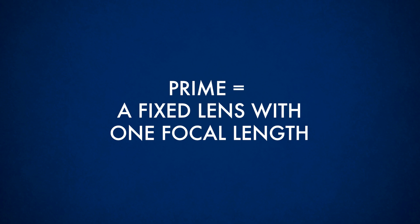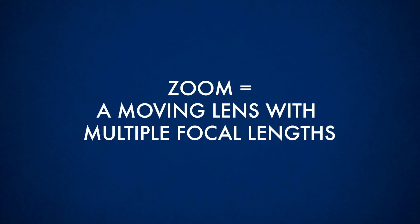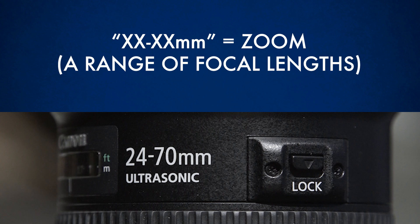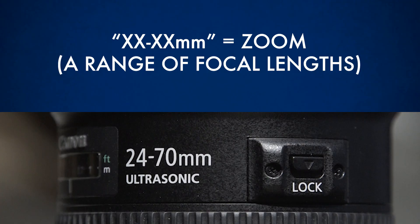Lenses are either primes, meaning fixed lenses which give just one viewpoint, or zooms which can change and give a range of viewpoints. If the lens has one millimetre number, then it just has one focal length and therefore it is a prime lens. And if it has two numbers with a dash, then it has a range of focal lengths and so it is a zoom lens.